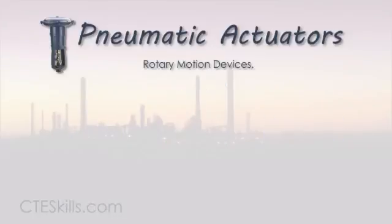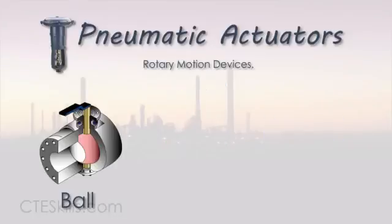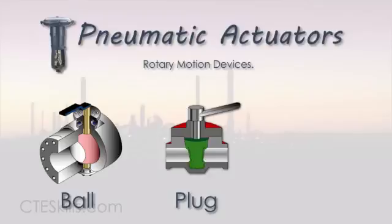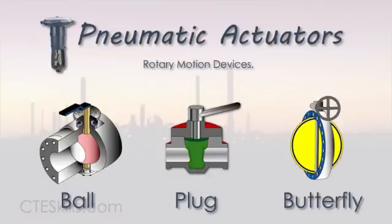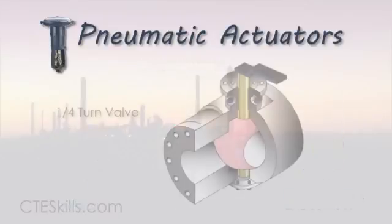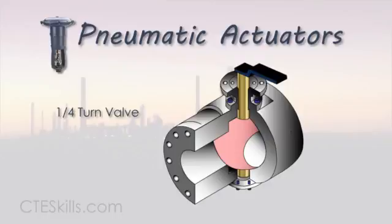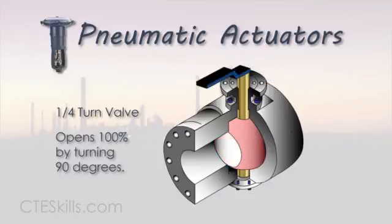Rotary motion typically operates quarter-turn type valves such as ball, plug, and butterfly. A quarter-turn valve is one which can be opened 100% by turning the flow control element just 90 degrees.